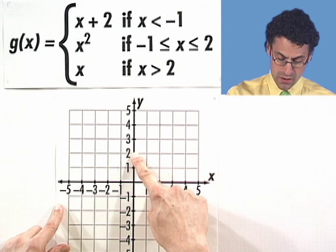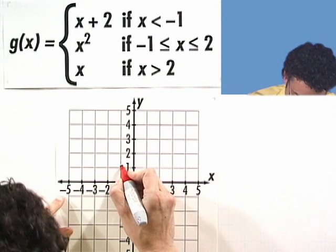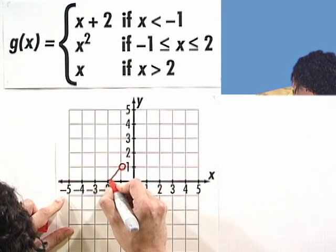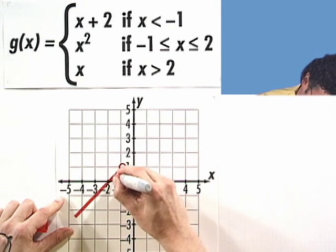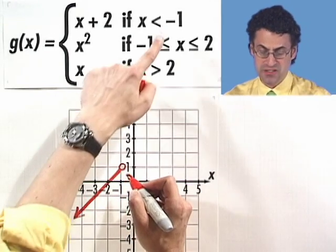And then my slope is 1. So I go 1 over, 1 down, 1 over, 1 down. And so what I see here is this slope 1 going all the way up to x equals negative 1, but then I have an open circle.